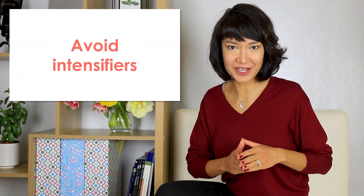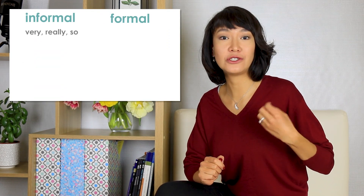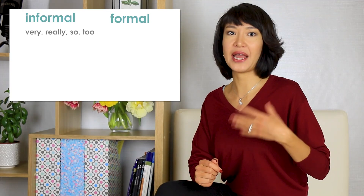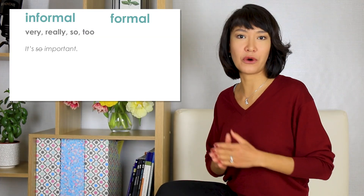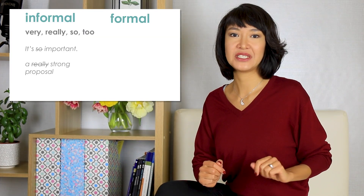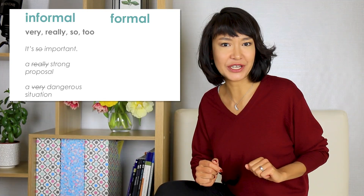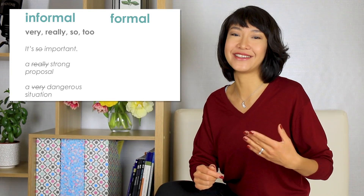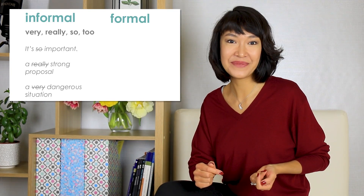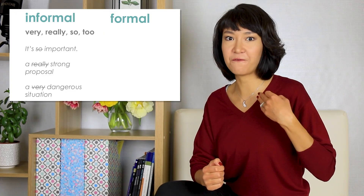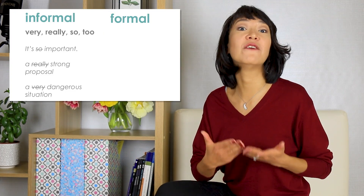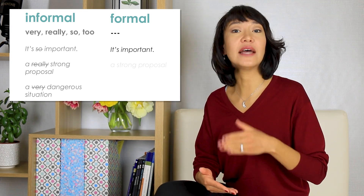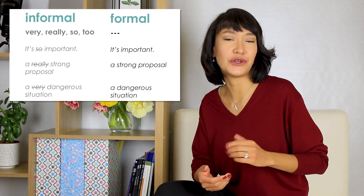Avoid intensifiers. Very, really, so, and too are known as intensifiers because they make adjectives or adverbs stronger — 'It's so important,' 'a really strong proposal,' 'a very dangerous situation.' It's not incorrect to use them, and a lot of native speakers use and overuse them too. But if we're talking about achieving a formal style in your essay, then avoid them. Just leave them out: 'It's important,' 'a strong proposal,' 'a dangerous situation.'